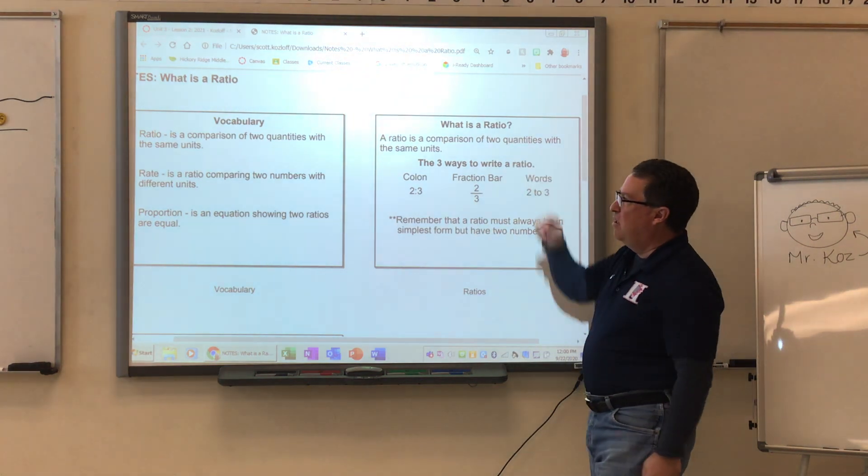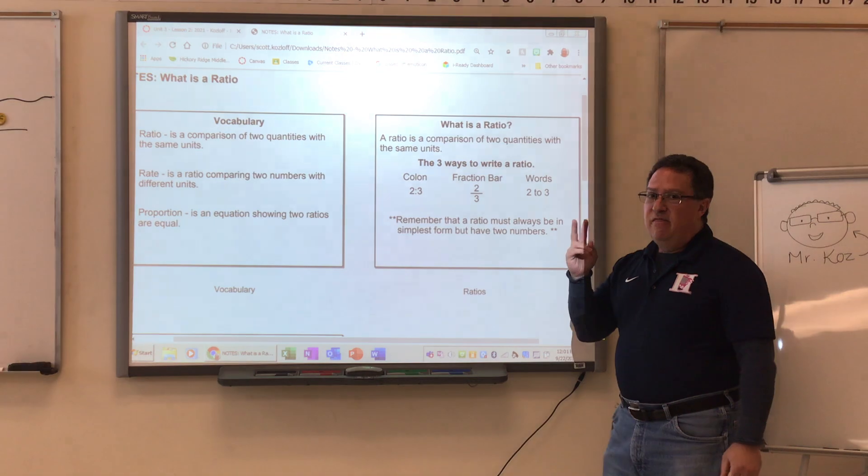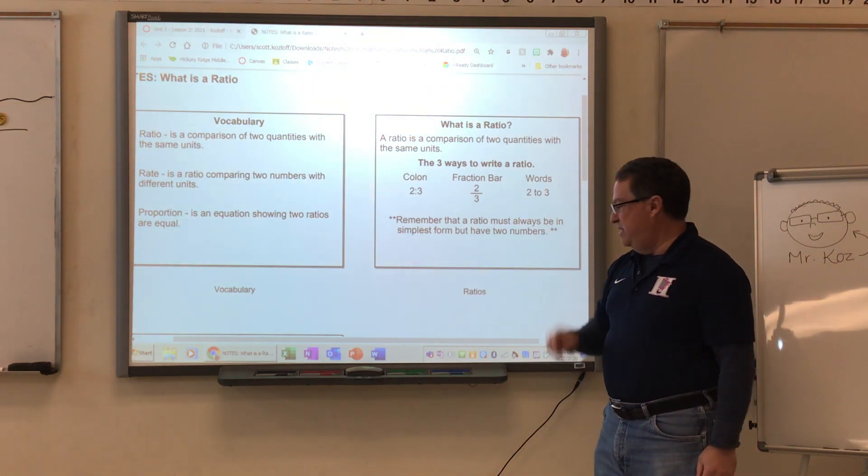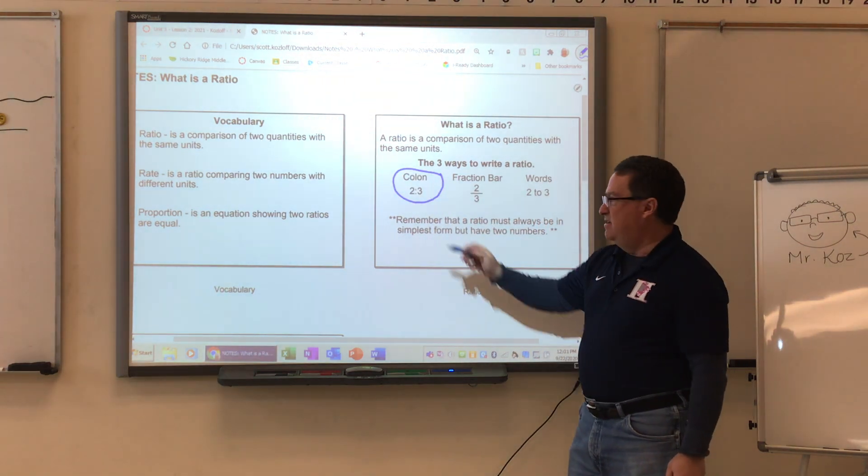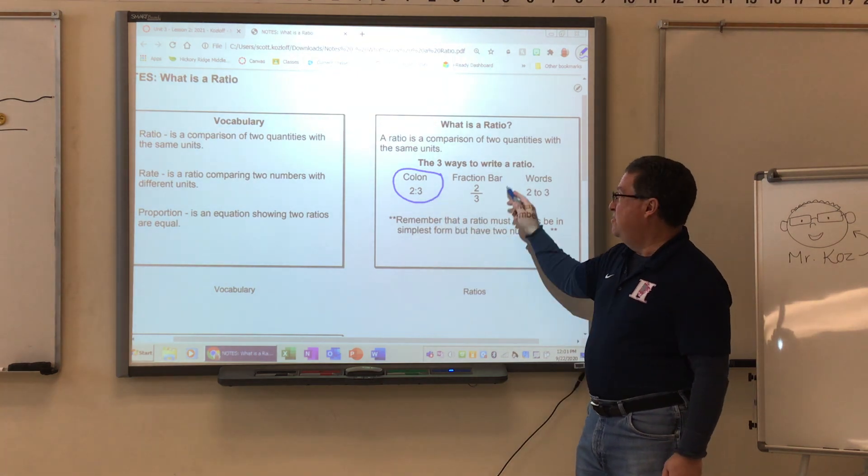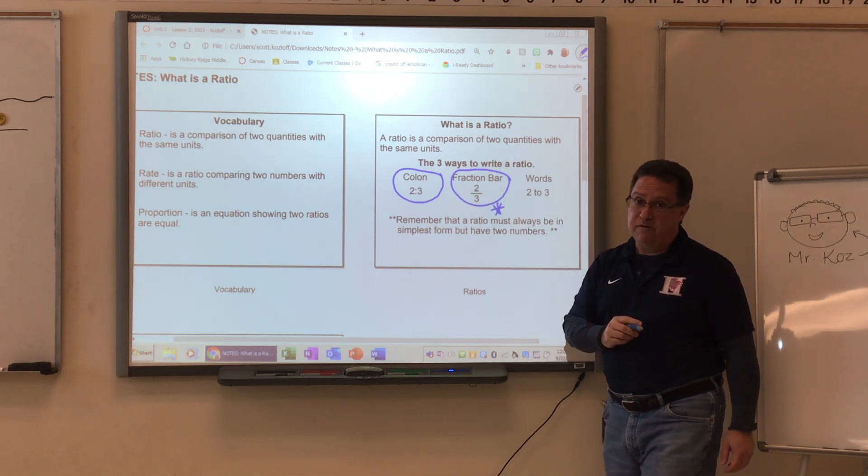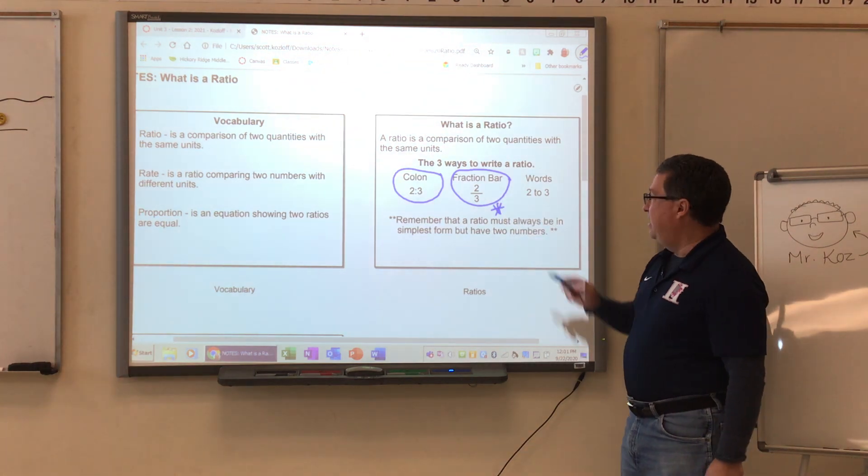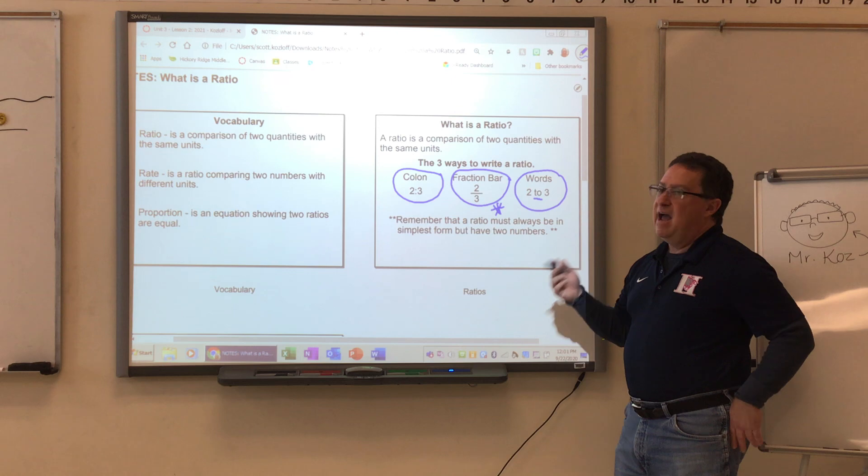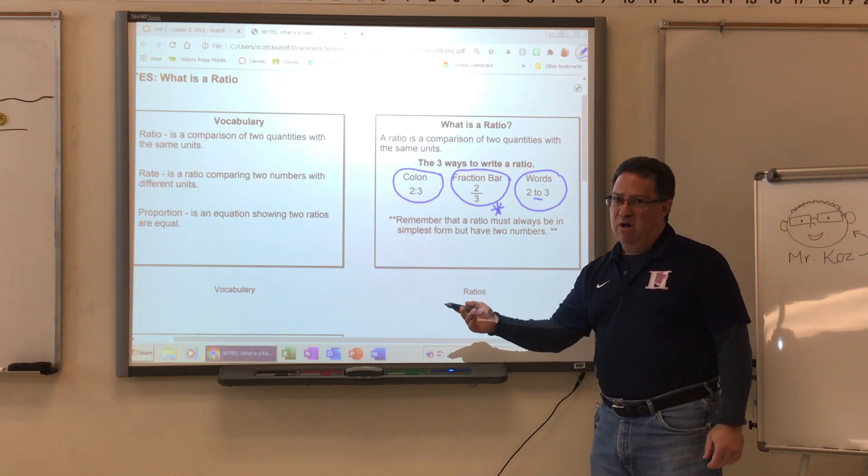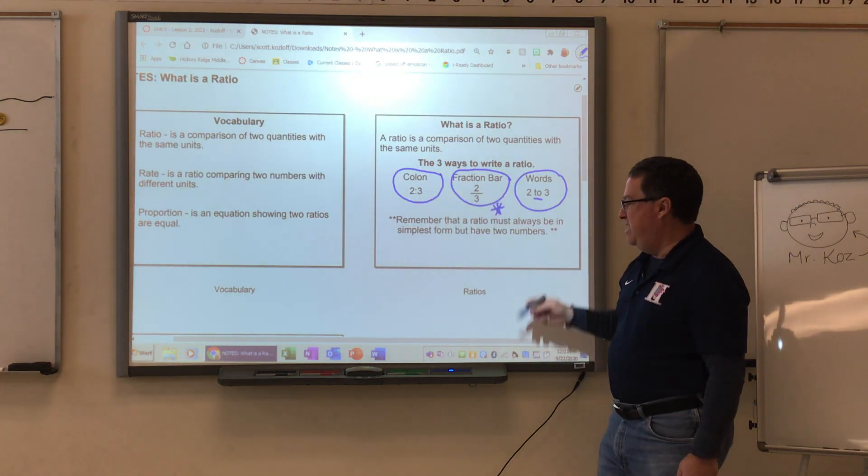So let's get into that a little bit. First of all, what is a ratio? Once again, a ratio is a comparison of two quantities with the same units. There are three ways to write a ratio, and this is very important. The first way to write it is with a colon in between it. This is 2 to 3, and that's my ratio. You can also write it using a fraction bar, which is going to be one of the most important ones we remember for this unit. And the third way is to write the word 'to' in between the two numbers.